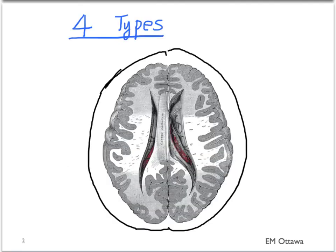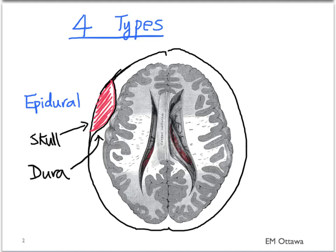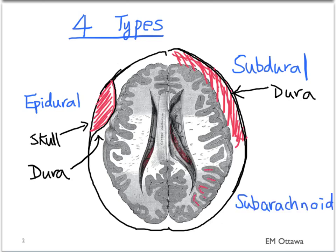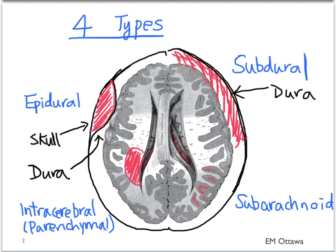There are four types of intracranial bleed depending on its location. The first is an epidural hematoma, where the blood is between the skull and the dura. The second type is a subdural hematoma, where the blood is underneath the dura. The third kind is subarachnoid hemorrhage, where the blood is underneath the subarachnoid membrane. The last type is intracerebral, also known as parenchymal hemorrhage, where the blood is in the parenchyma of the brain.